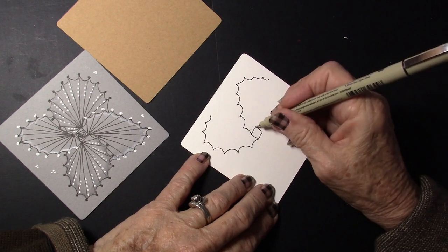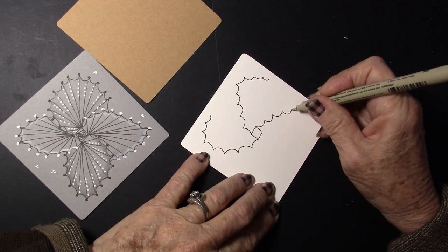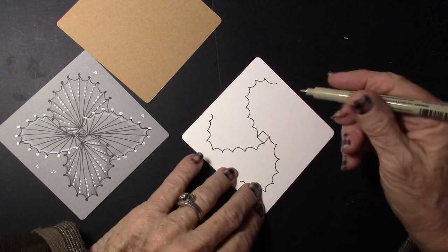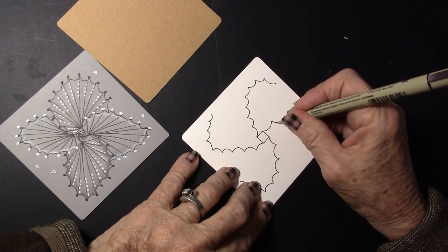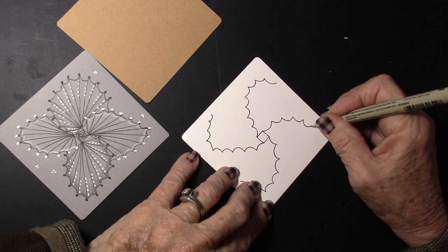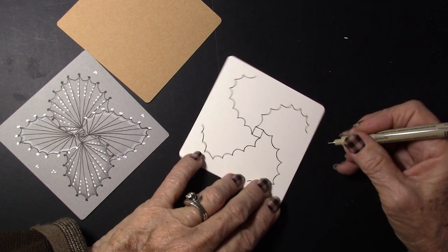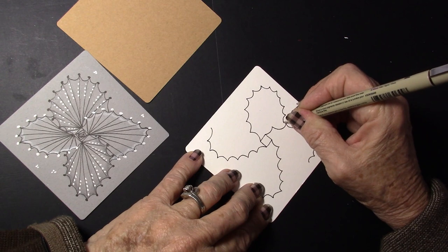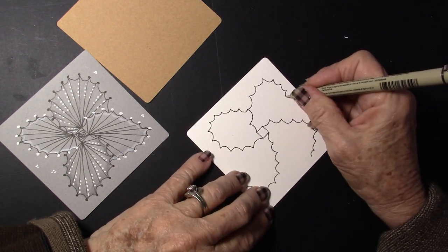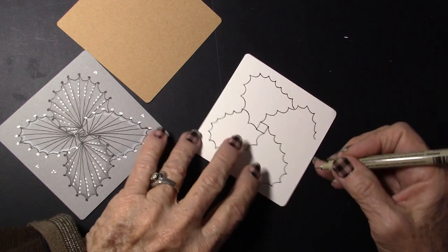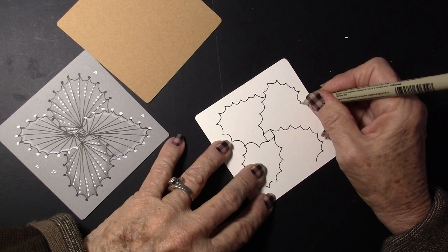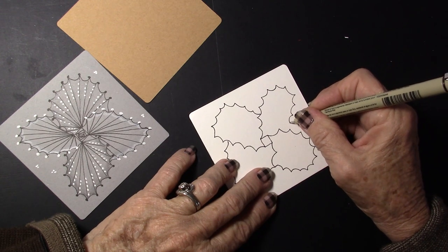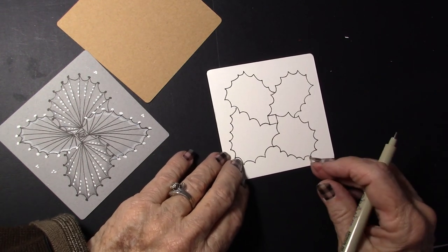So that it kind of goes up and over. Rotate one more time. Same thing. Just make sure that those scallops are going out. So they have these little points on them. And now we're going to scallop in until we touch the other side.